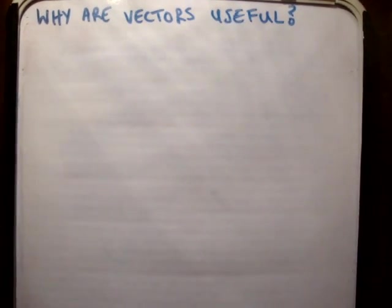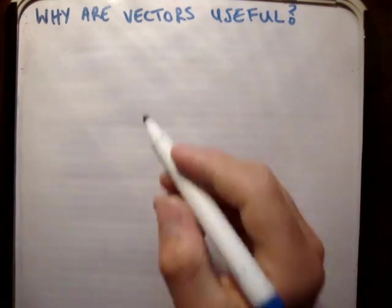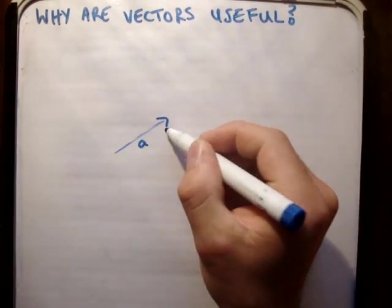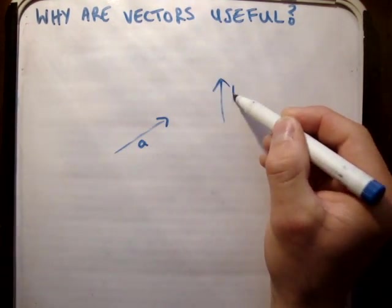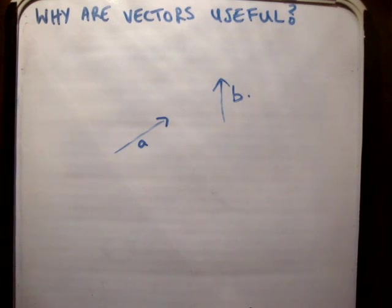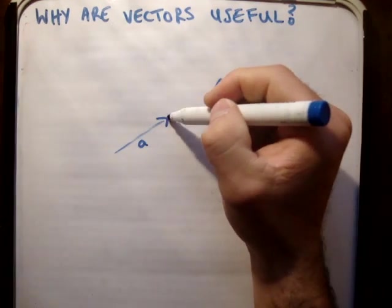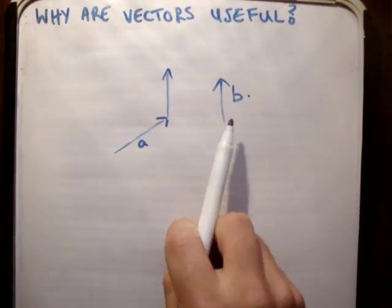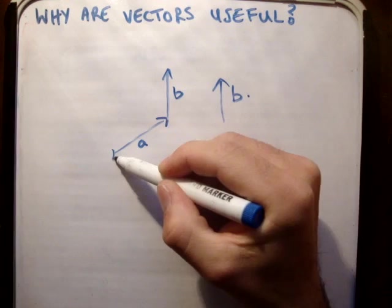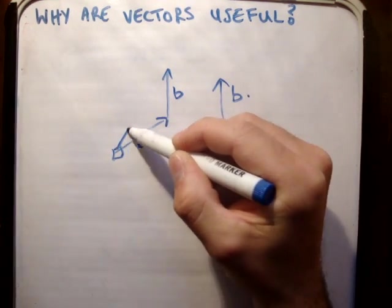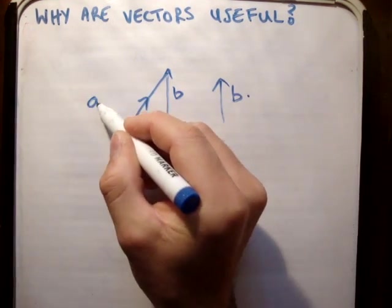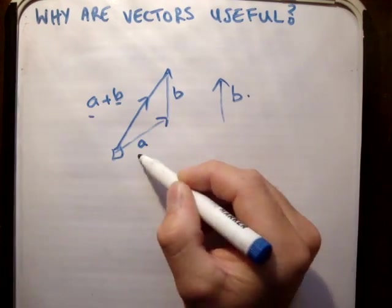Because we're able to add vectors and get an overall resultant vector - say if I had vector A and vector B, and I wanted to find out what would happen if I applied them at the same time - you add them by putting the tail of B at the head of A, and drawing a resultant from the tail of A to the head of B. This vector would be A plus B.